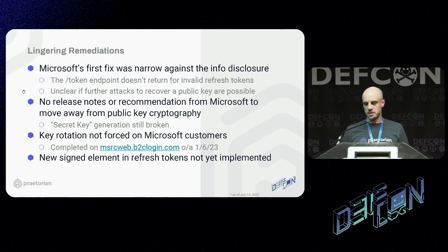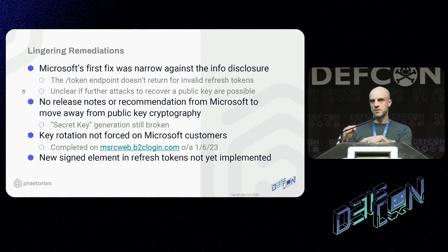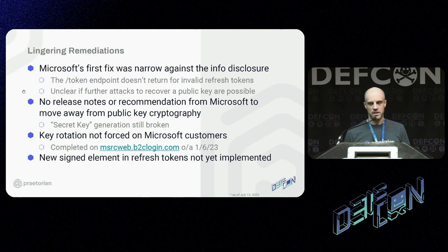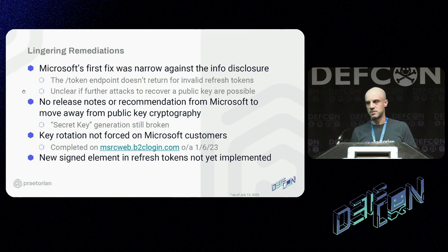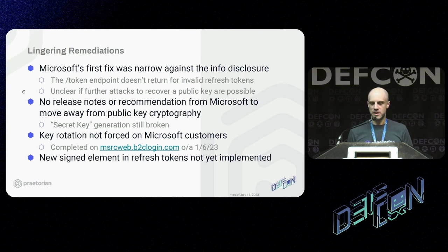Some lingering remediations remain. The first fix in December was narrow — it only cut off the timing attack itself, so it's unclear if other artifacts in the session could still be used to recover the key. James Kettle's talk this morning about similar tools suggests it may be possible to get around this mitigation. Microsoft is also expected to encourage users to use secret key generation instead of RSA key generation. The new signing element in refresh tokens isn't quite implemented yet, but they're still working toward it.